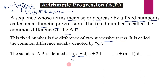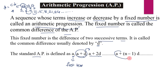In the standard form, 'a' means the first term and 'd' means the common difference. The second term is obtained by adding d to the first term, giving a+d. Adding d to the second term gives the third term a+2d. To get the nth term, the formula is a + (n-1)d.